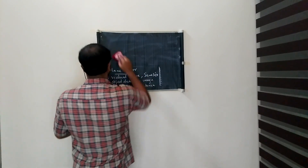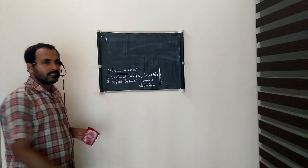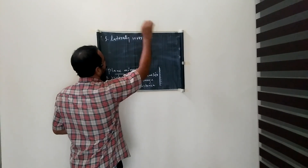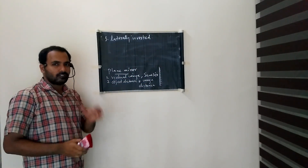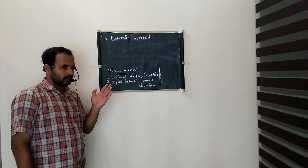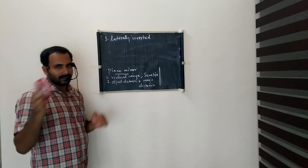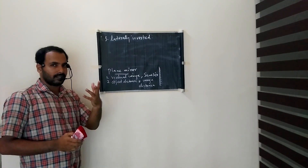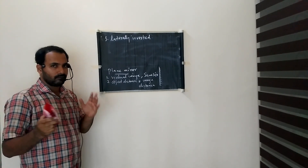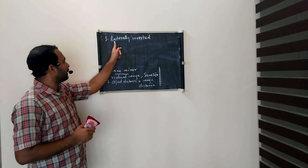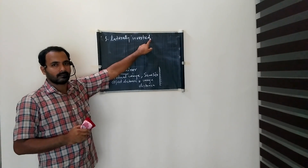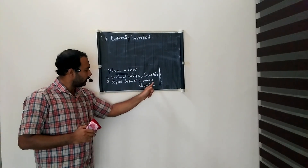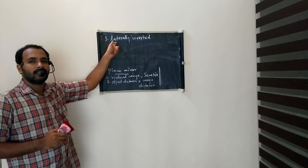The third property is that the image is laterally inverted. Laterally inverted means our left side appears as the right side and our right side appears as the left side in a plane mirror. So the image properties of a plane mirror are: virtual, same size, object distance equal to image distance, and laterally inverted.